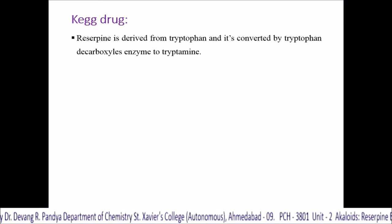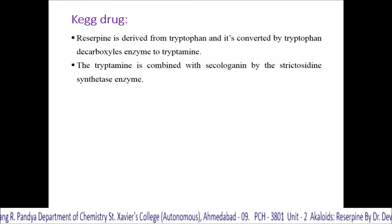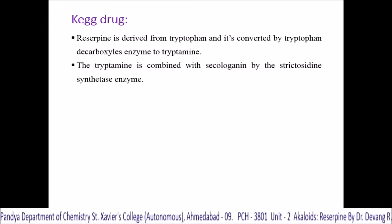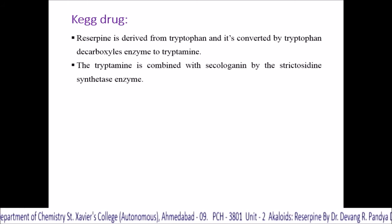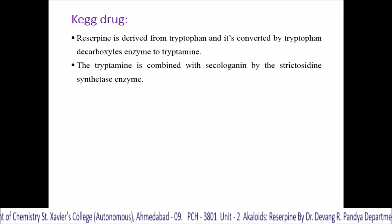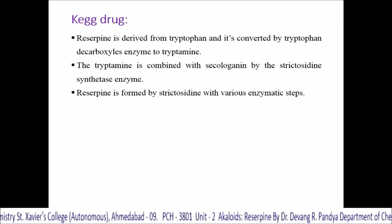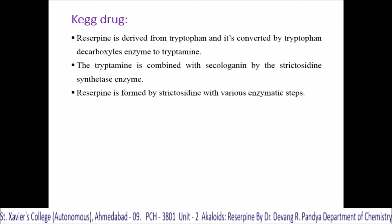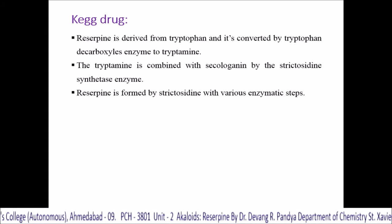Reserpine is derived from tryptophan via the enzyme tryptophan decarboxylase to form tryptamine. The tryptamine is then combined with secologanin by the strictosidine synthase enzyme. Reserpine is formed from strictosidine through various enzymatic steps.